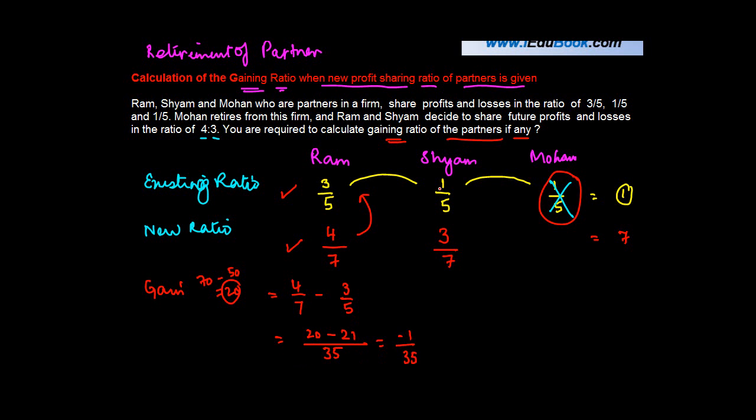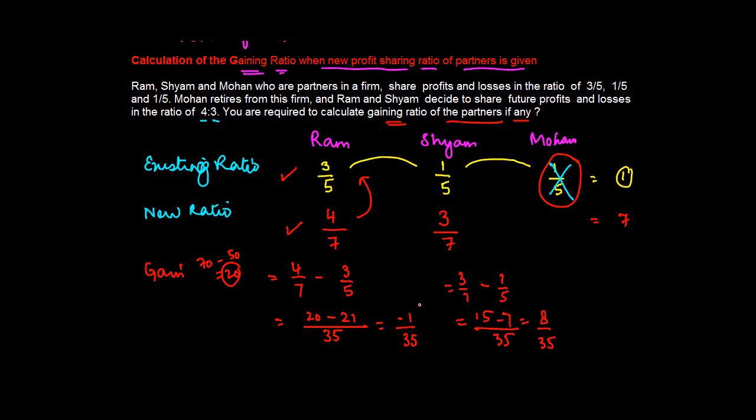And what is the gain made by Sham? Sham makes a gain of 3/7 minus 1/5. The common denominator is 35: 5 times 3 gives you 15, minus 7 gives you 8. So 8/35.